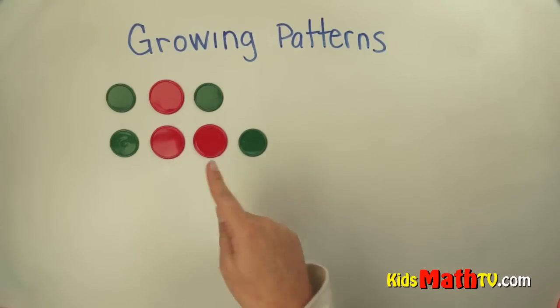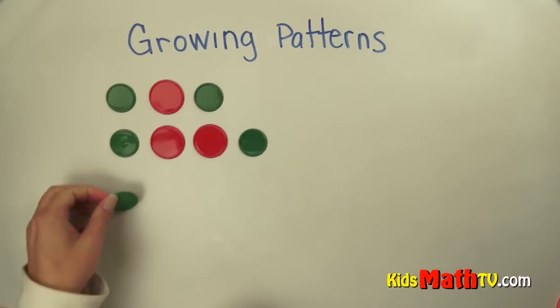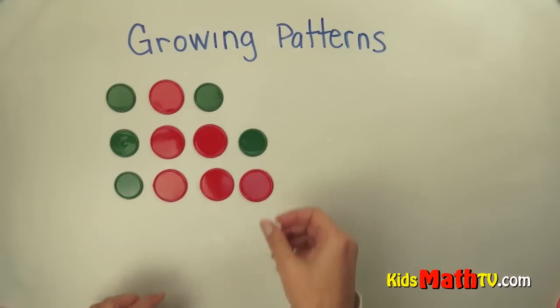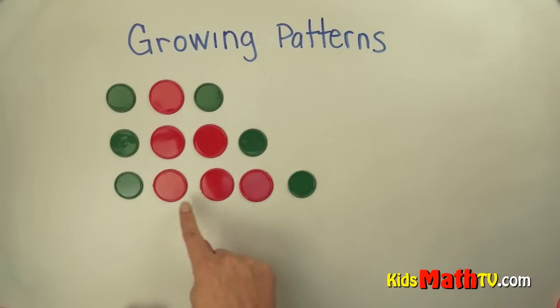But the red is actually increasing or growing by one. So the next pattern would be the green, and then red, red, it has to grow so I'm going to put another red, and then a green. So the red is actually growing by one.